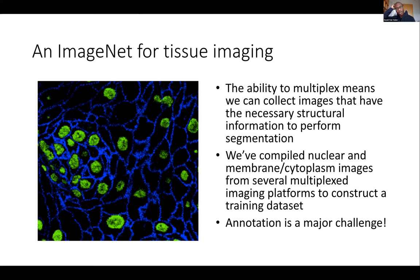Here we arrive at our first story. Working with Michelangelo's lab at Stanford, we set out to solve the problem of both nuclear and whole-cell segmentation in tissues using deep learning. The very first step was building a data set for tissue imaging. The ability to multiplex means we can actually collect images with the necessary structural information so that we can reliably perform the segmentation. In building this data set, we compiled data across all the different platforms and across a wide variety of different tissues being imaged. We made sure that each data set had both a nuclear image and also an image of a membrane or cytoplasm marker.